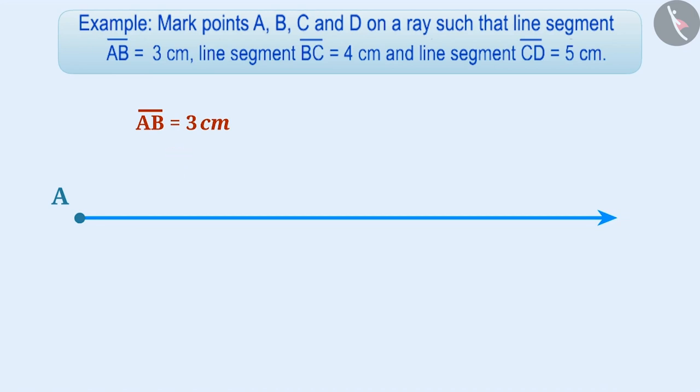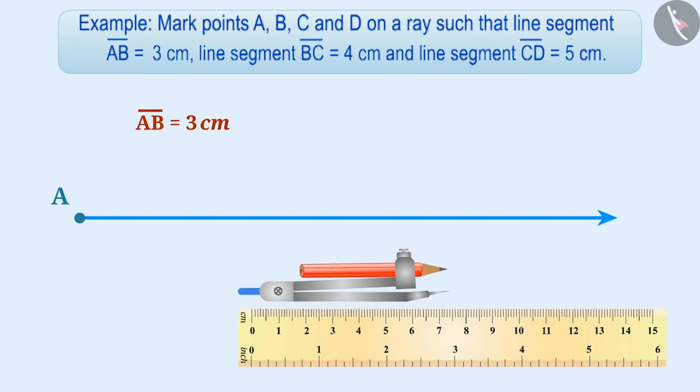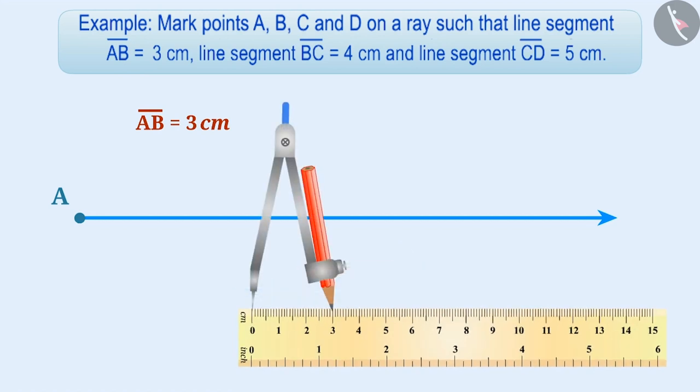Let me explain this. We will take one divider and one ruler. Open the divider and place the endpoint of one arm on zero of the ruler. As the length of the line segment is 3 cm, we keep the endpoint of the second arm at 3 cm.